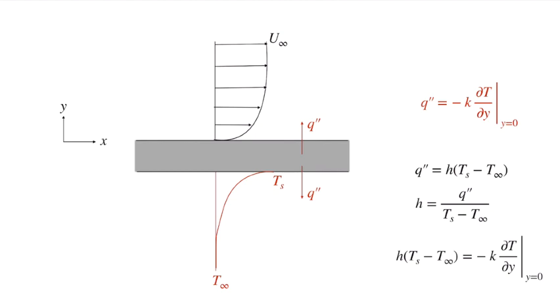We have Newton's law of cooling from which we define the convection coefficient for engineering calculations, and we have Fourier's law at the surface. Equating those two gives us: h times (Ts minus T infinity) equals minus k times the temperature gradient at the wall.